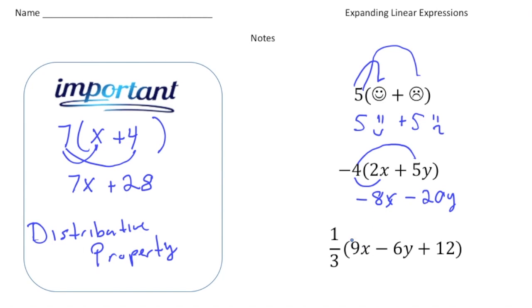And then the last one we have is 1 third times 9x minus 6y plus 12. So 1 third times 9x is going to give us 3x. And then 1 third times 6y is 2y. But notice we're subtracting that, so it's going to be minus 2y. And then 1 third times 12 is 4, so plus 4.